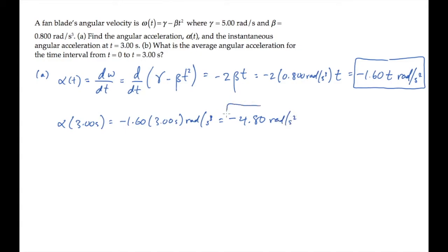Part B asks for the average angular acceleration between the times 0 and 3 seconds. The average angular acceleration is the change in angular velocity over the change in time. That's omega final minus omega initial over delta t.